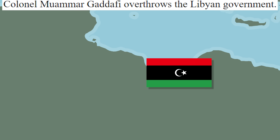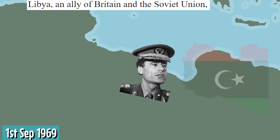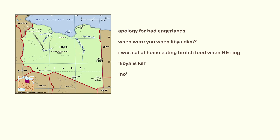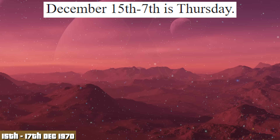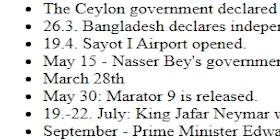September 1st: Colonel Muammar Gaddafi overthrows the Libyan government. Libya, an ally of Britain and the Soviet Union, was killed. Rest in peace. A moment of silence for Libya, please. The entire country was killed. 1970. August 17th includes Wolves 7th. December 15th to the 7th is Thursday. He becomes the first astronaut to land on another planet. 1971. Idi Amin's victory in Uganda on January 25th was a joke. My favourite one is just March 28th. Say no more.